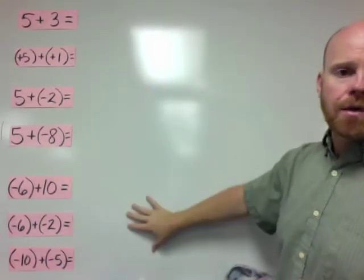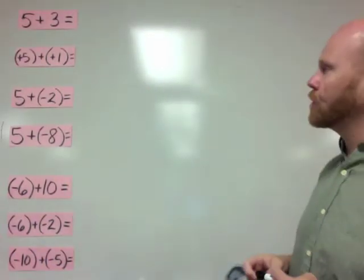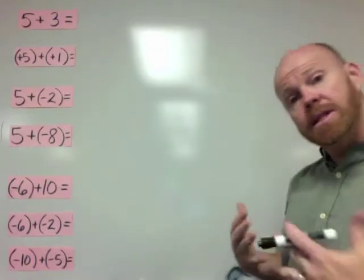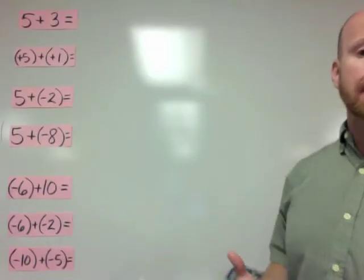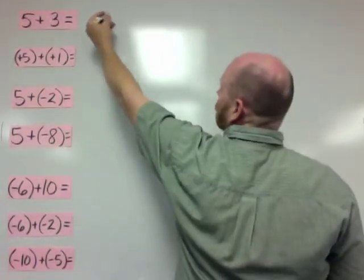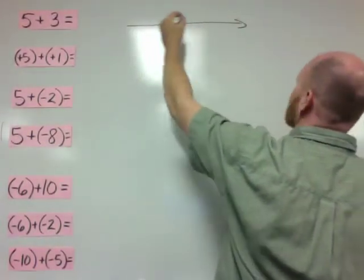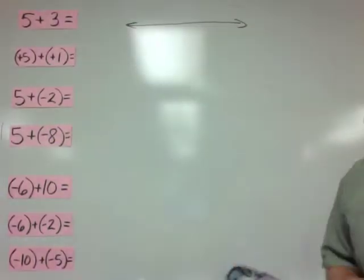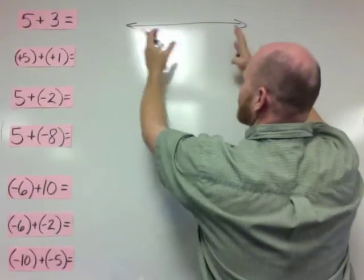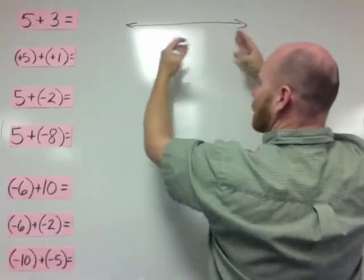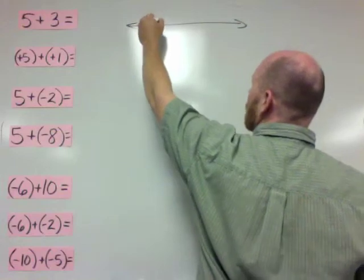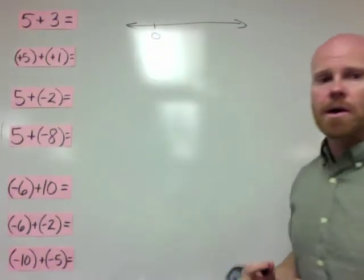In this video I'm going to show you how to add integers using a number line as their model. There are a lot of different models that could be used, but this time we're going to use the empty number line. We'll start with a very basic problem. An empty number line means you don't really have a sense of the scale — it's completely flexible. We're going to start off at 0, and we always start off at 0.